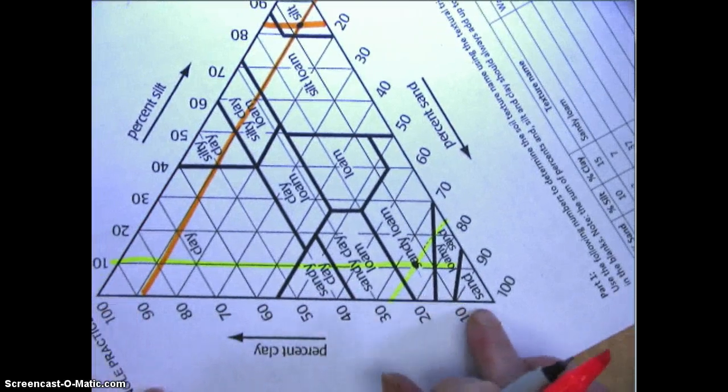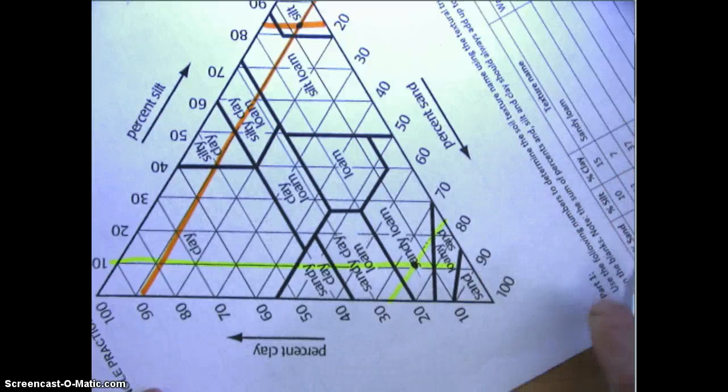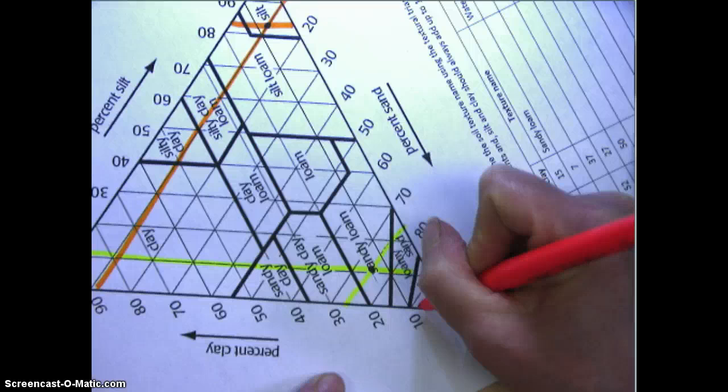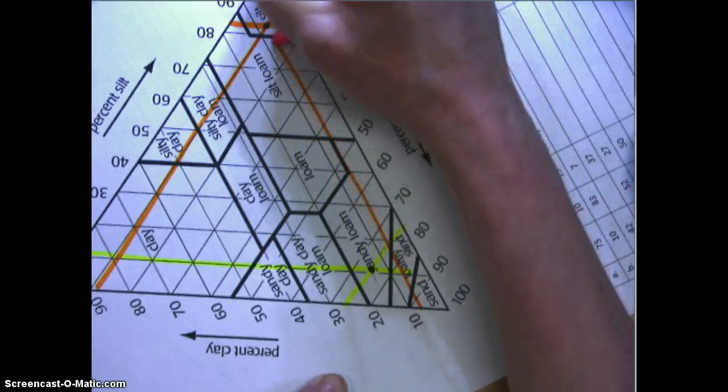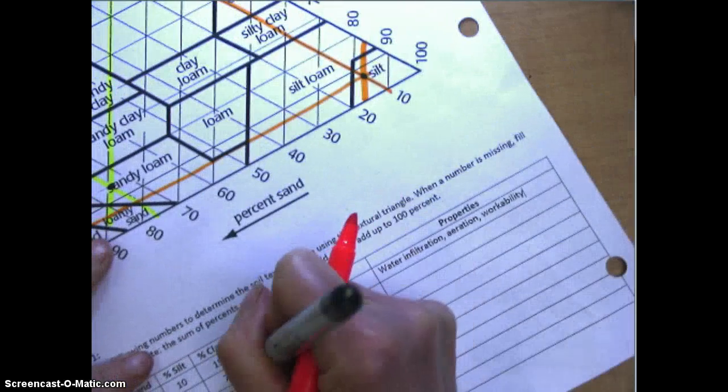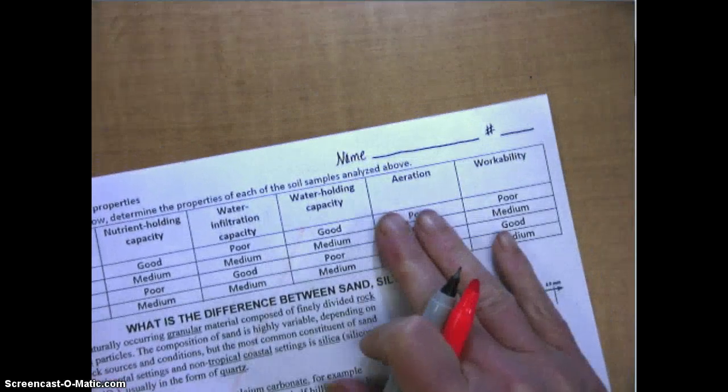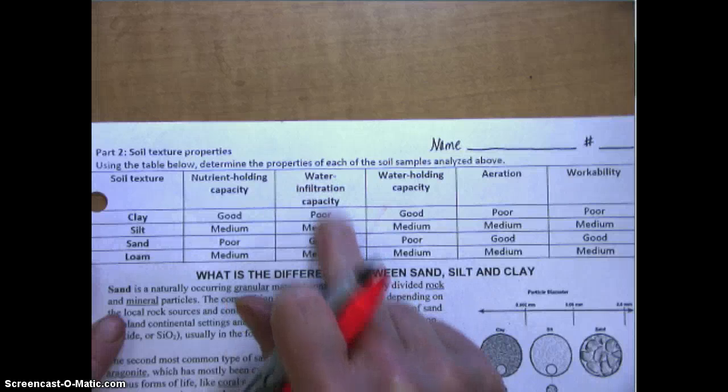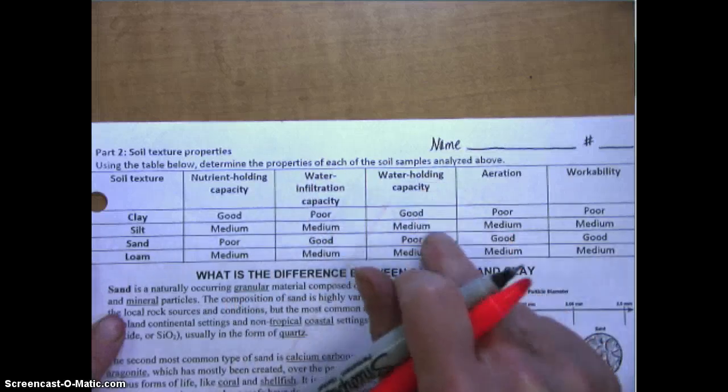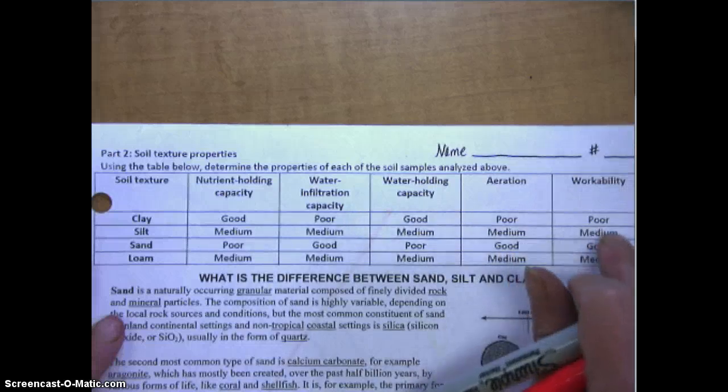So far we could figure out based on those two that it's silt, but let's double check 7% clay. We're going to face the clay part towards you. Here's 10, here's 5, so we're going to go to 7. Seven would be about between 10 and 5, and indeed boom, we're going to write silt here.